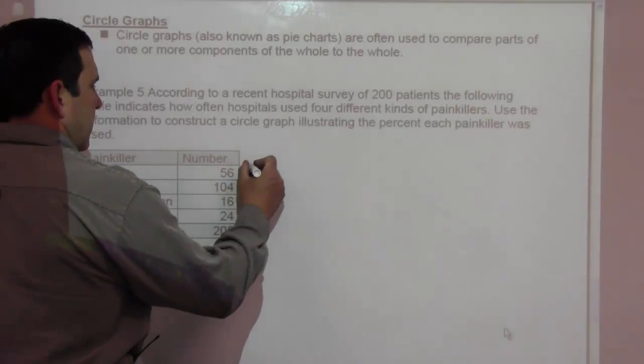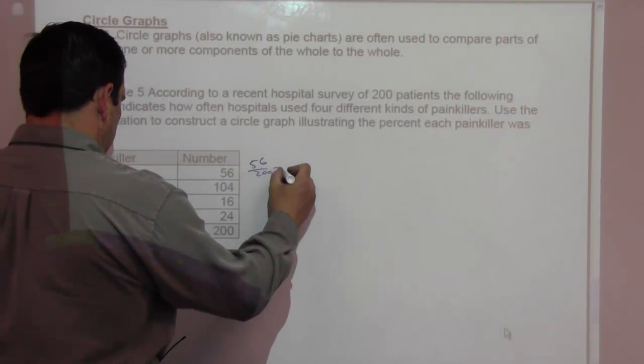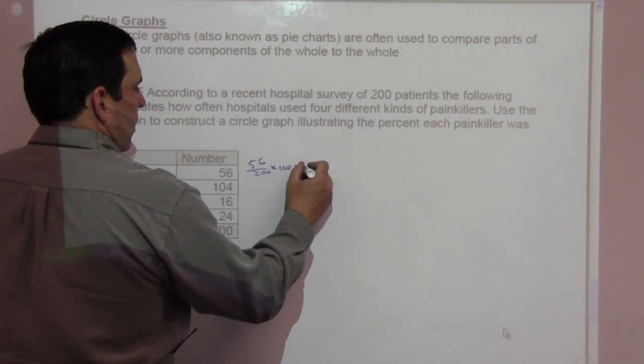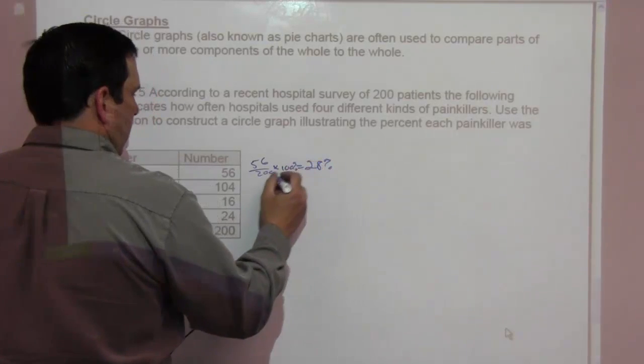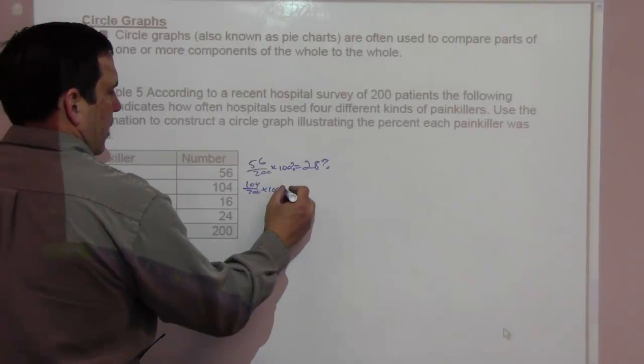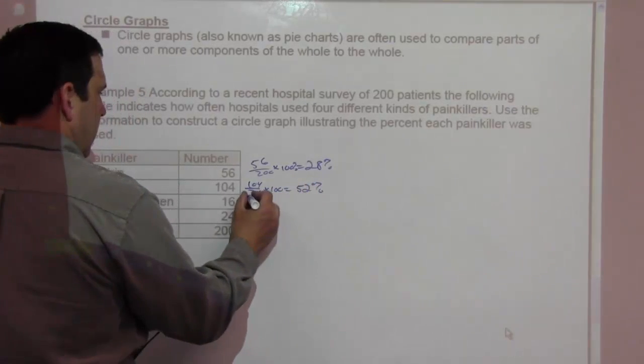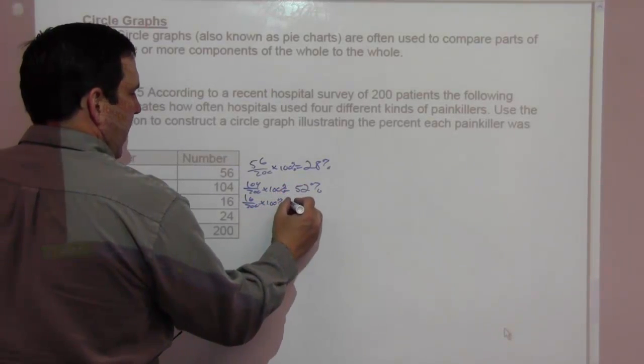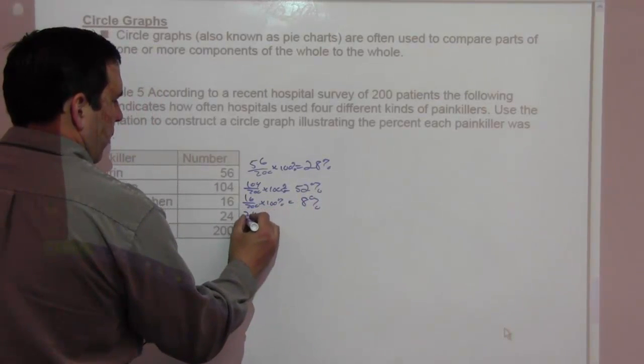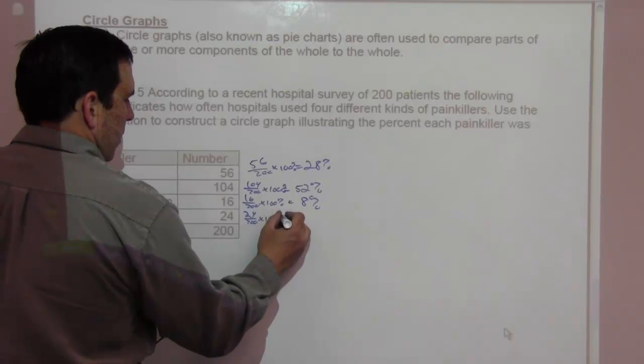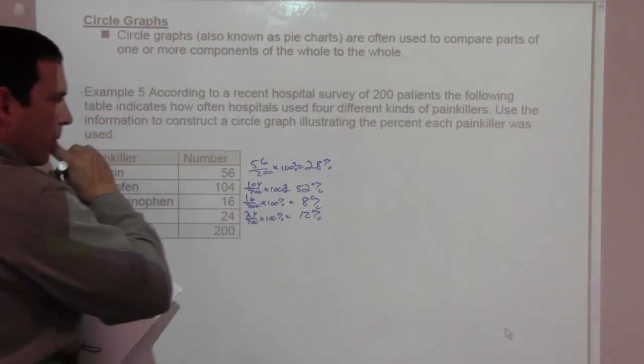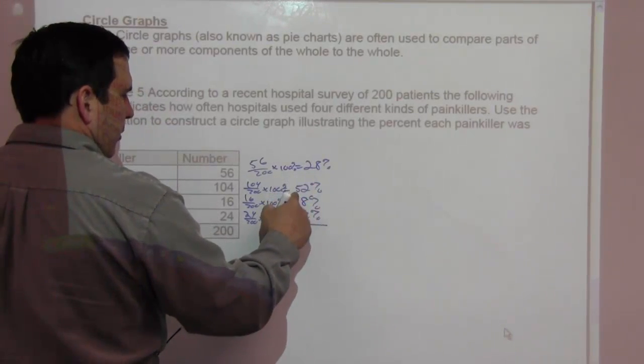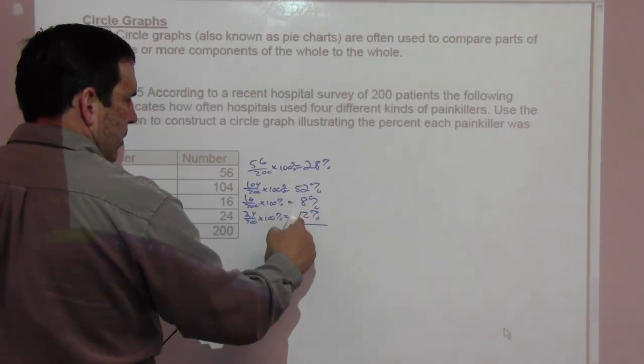So, in the first case, we have 56 out of 200, and that's going to be times 100 is 28%. 104 over 200 times 100 is 52%. 16 over 200 times 100%, that's going to be 8%. And 24 over 200 times 100% is going to be 12%. Let's see, does that add up? 28 and 52 is 80. 80 plus 8 is 88 plus 12 is 100%.